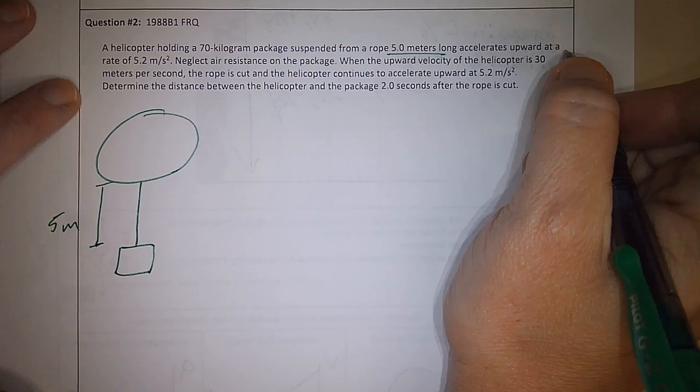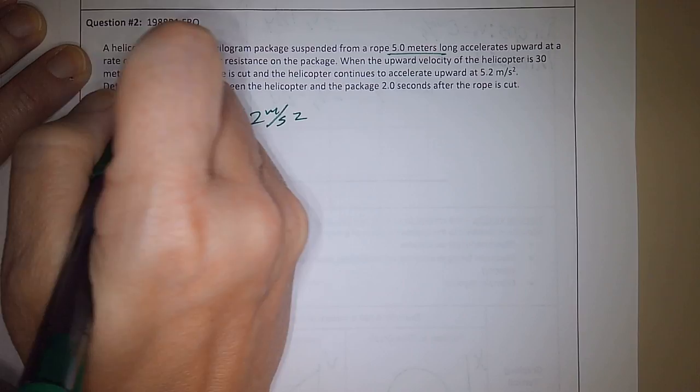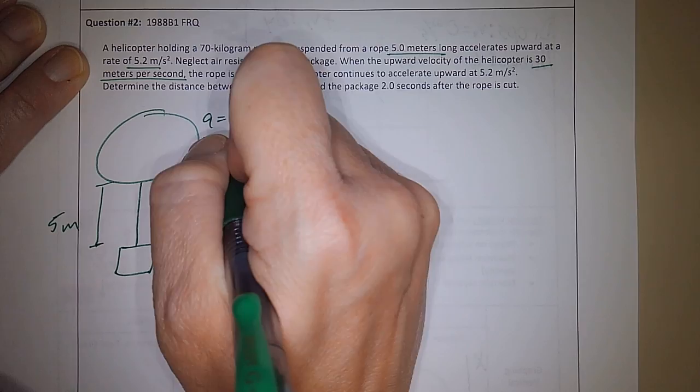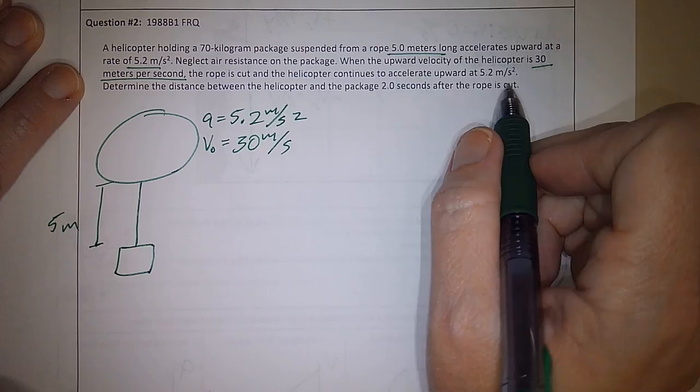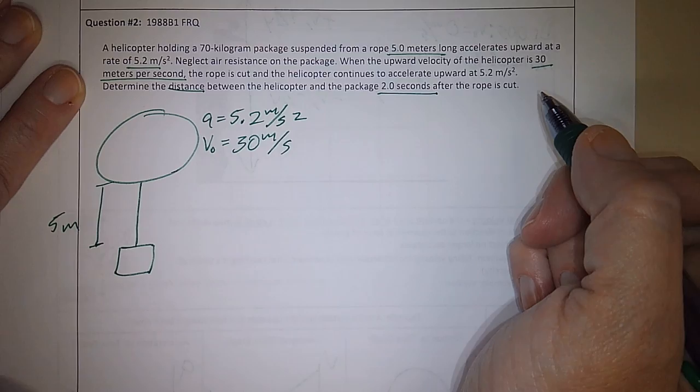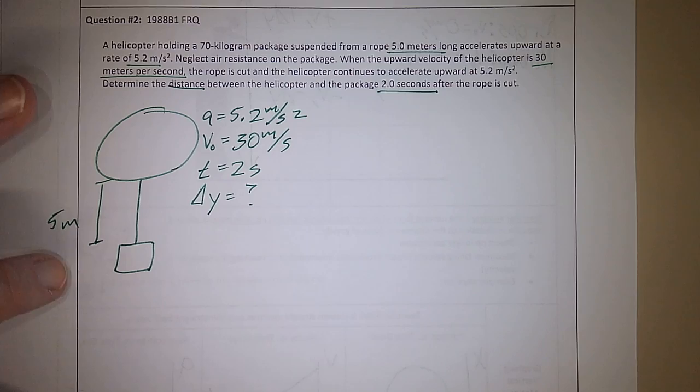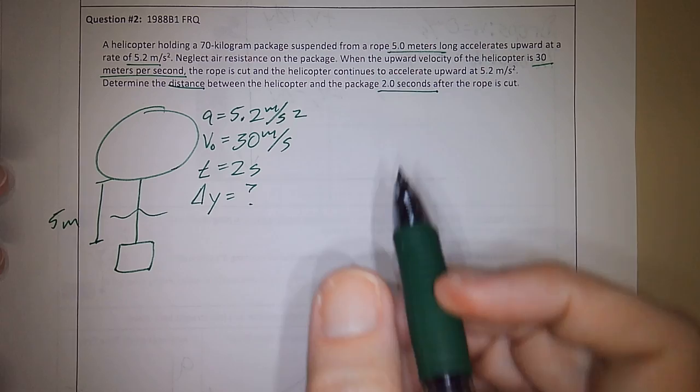It accelerates, the helicopter accelerates upwards at a rate of five point two meters per second squared, so my acceleration of the helicopter is positive 5.2 meters per second squared. When neglecting air resistance, when the upward velocity of the helicopter is thirty meters per second, so that's positive thirty, my V initial, at this moment the rope is cut. So my V initial is positive thirty meters per second because it's going up, and continues to accelerate upward at 5.2 meters per second squared.